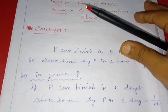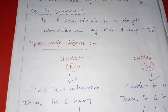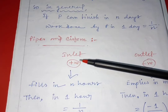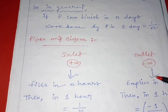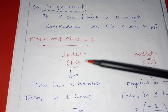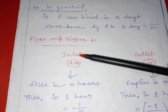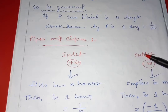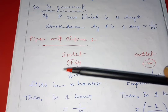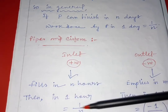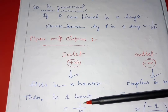Now for problems related to pipe and cistern, there are two terms: inlet and outlet. Inlet means positive and outlet means negative. Inlet is when a pipe fills a tank — that pipe is called an inlet. When a pipe empties the tank, that pipe is called an outlet. If an inlet fills the tank in n hours, then in one hour the one by nth part of the tank is filled.